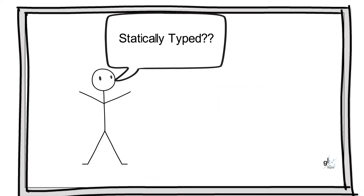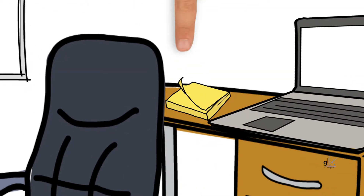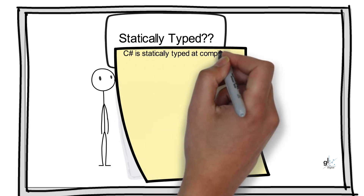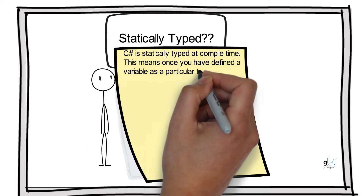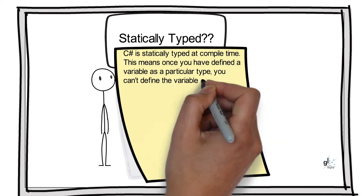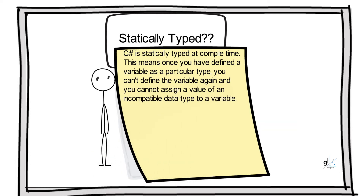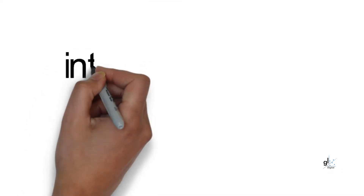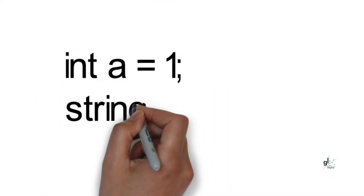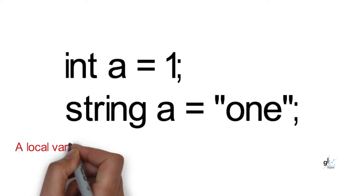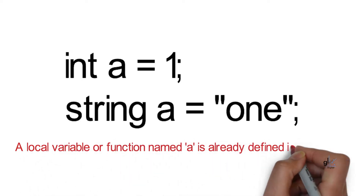What is a statically typed programming language? C# is statically typed at compile time. This means once you have defined a variable as a particular type, you can't define the variable again, and you cannot assign a value of an incompatible data type to a variable. Here is an example of defining a variable twice — this would result in a compile time error stating: a local variable or function named A is already defined in this scope.